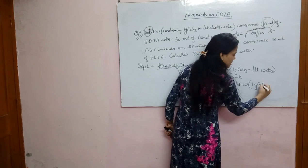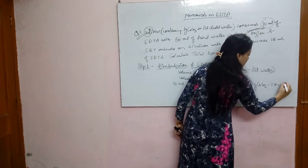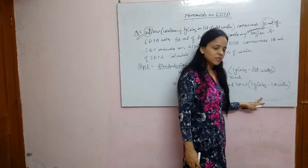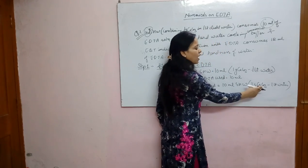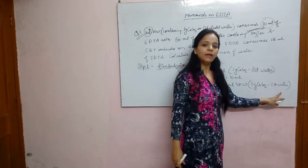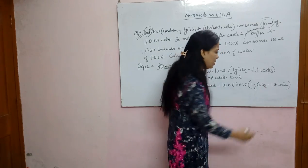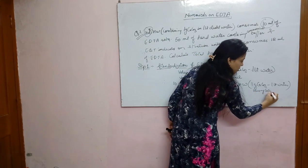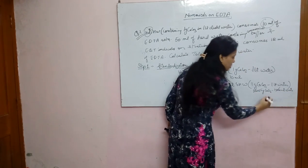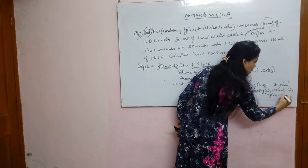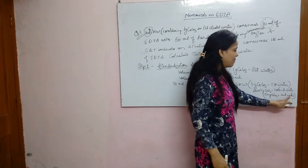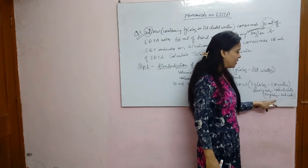We have to convert the amount of CaCO3 from grams to milligrams and the volume of water from litres to ml. So: 1 gram CaCO3 = 1000 mg CaCO3, and 1 litre = 1000 ml. The 1000s cancel out, meaning 1 mg CaCO3 is present in 1 ml of standard hard water. Therefore, 1 ml standard hard water contains 1 mg CaCO3.